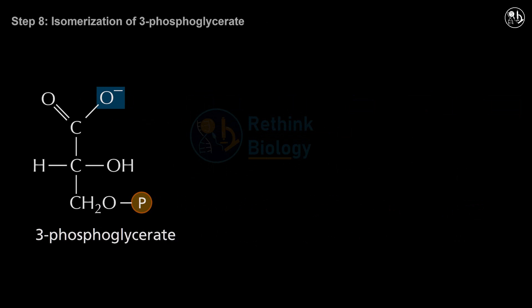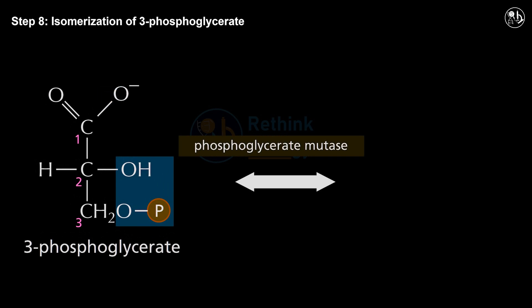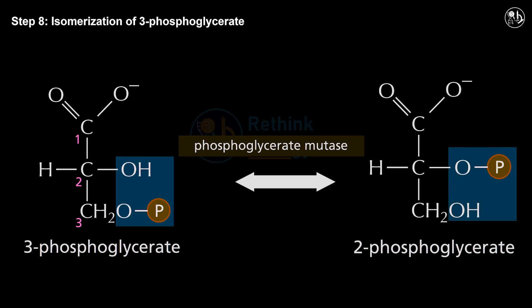Step 8: Isomerization of 3-phosphoglycerate. In this step, the enzyme phosphoglyceromutase relocates the phosphate group from the third carbon atom to the second carbon atom of 3-phosphoglycerate, forming 2-phosphoglycerate.